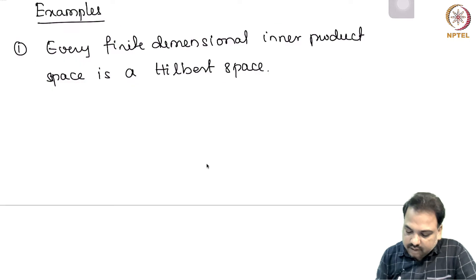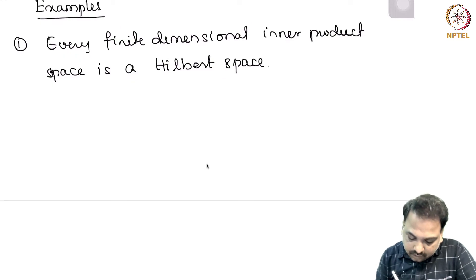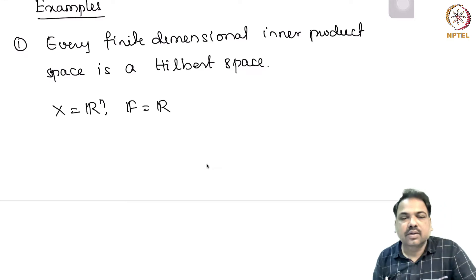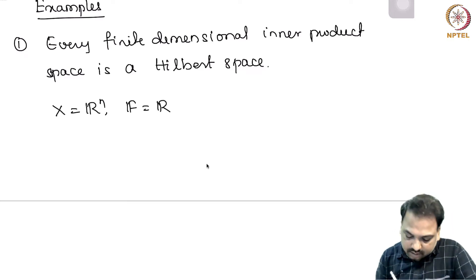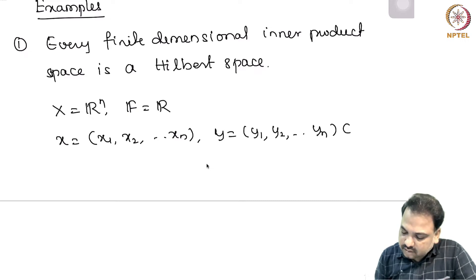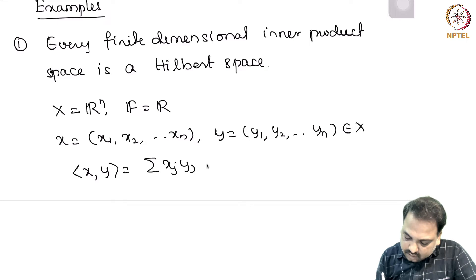In particular, we take X to be R^n and the field is R. We know how to define the inner product here. X is (x_1, x_2, ..., x_n) and Y is (y_1, y_2, ..., y_n). So inner product ⟨X, Y⟩ is summation x_j y_j.